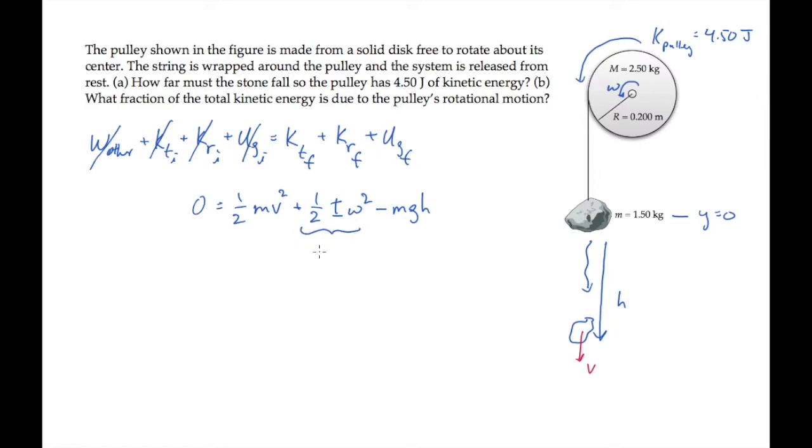We're told that the pulley's rotational kinetic energy is four and a half joules, and we're asked to find h, which we could do except that we don't know how fast the stone is moving at that point. We don't know v.